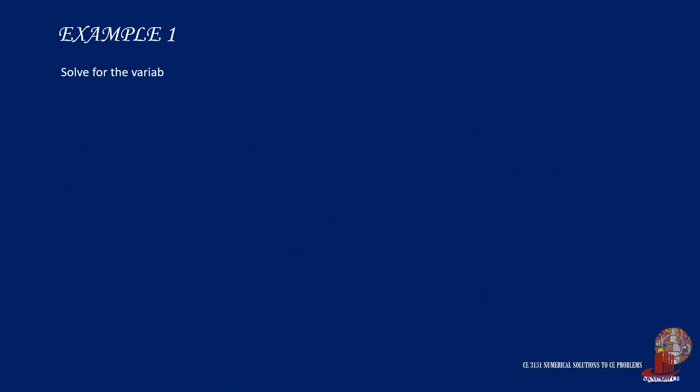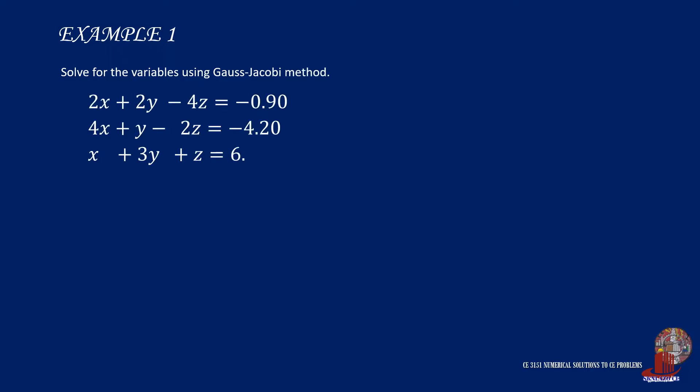Say that we have a system of equations with three variables marking three equations. They are: 2x plus 2y minus 4z equals negative 0.90; 4x plus y minus 2z equals negative 4.20; and x plus 3y plus z equals 6.40.